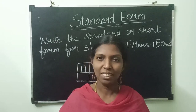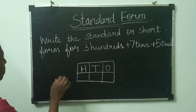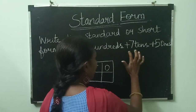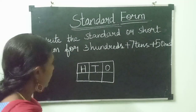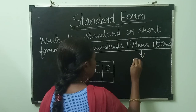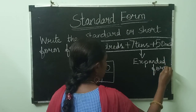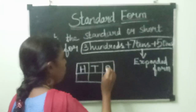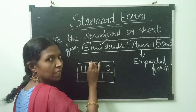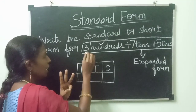Children, let us now look at standard form. Let us see one problem. Write the standard or short form for three hundreds plus seven tens plus five ones. This question is in expanded form, and we should find the standard form for it. Look at the first term — it is three hundreds, so we write 3 in the hundreds column.